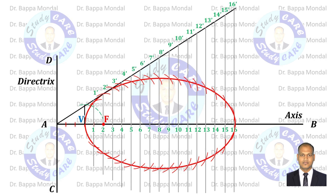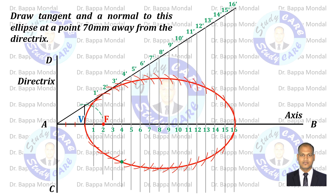Now to draw the tangent, take a point 70 millimeters away from the directrix. Then connect that point with focus F. Draw a perpendicular line as shown. Finally, join the intersection point with that point and extend it — this is the tangent. To draw the normal, a perpendicular line is to be drawn with the tangent.